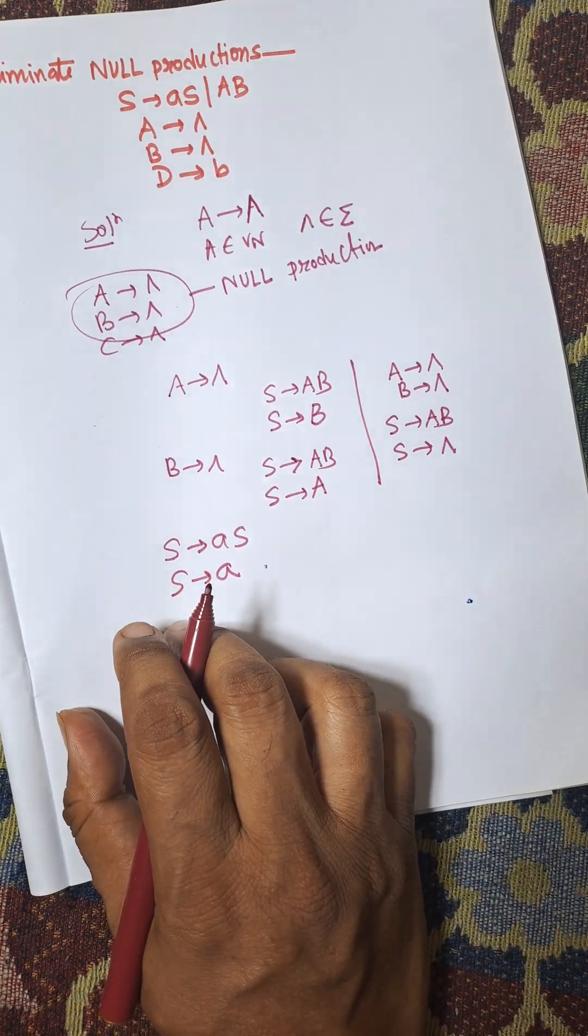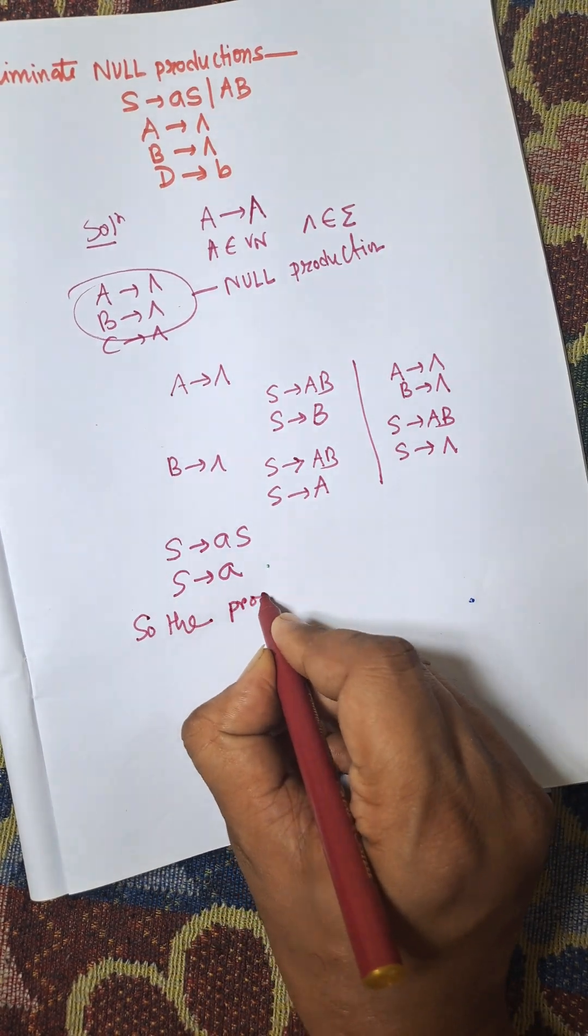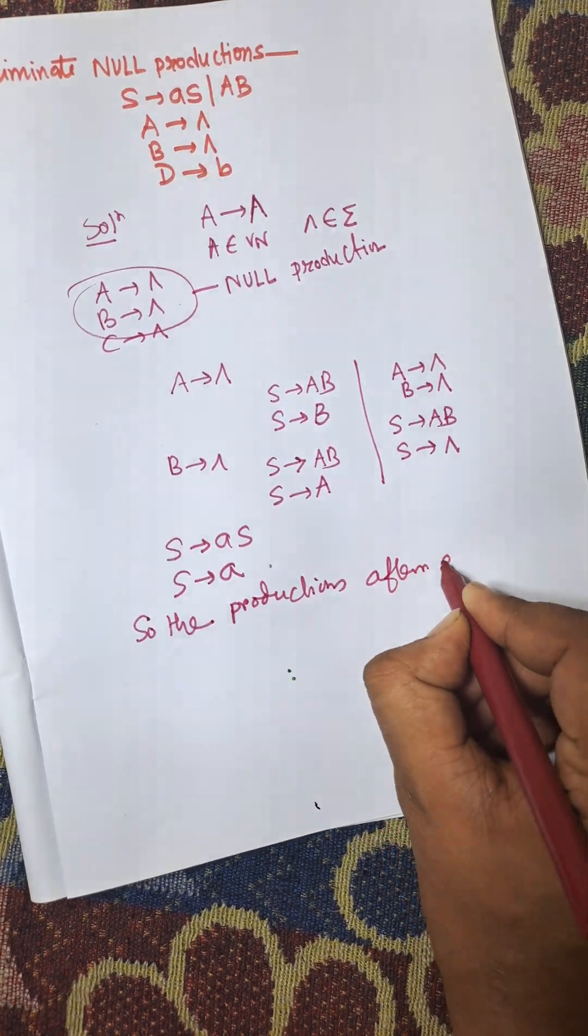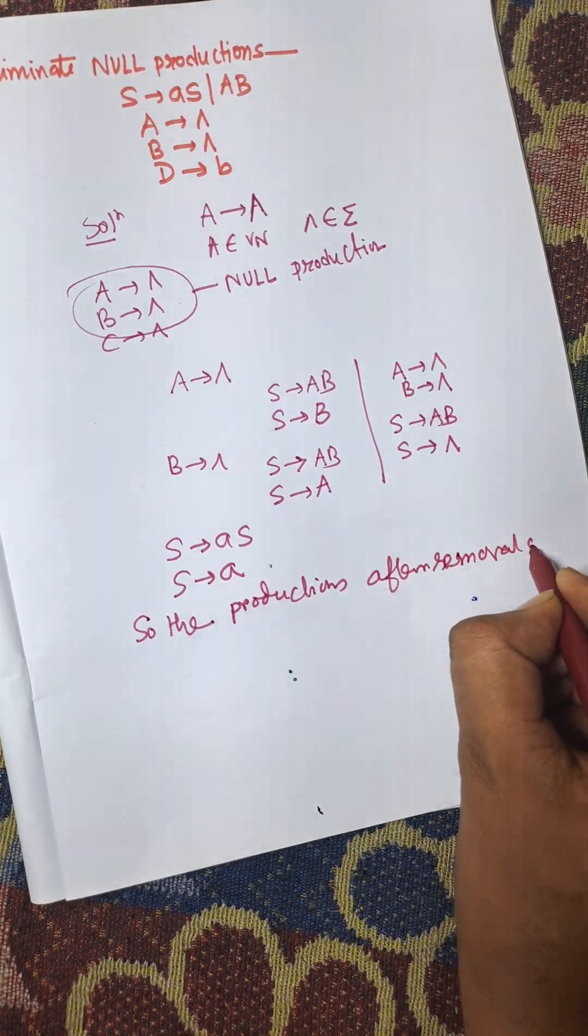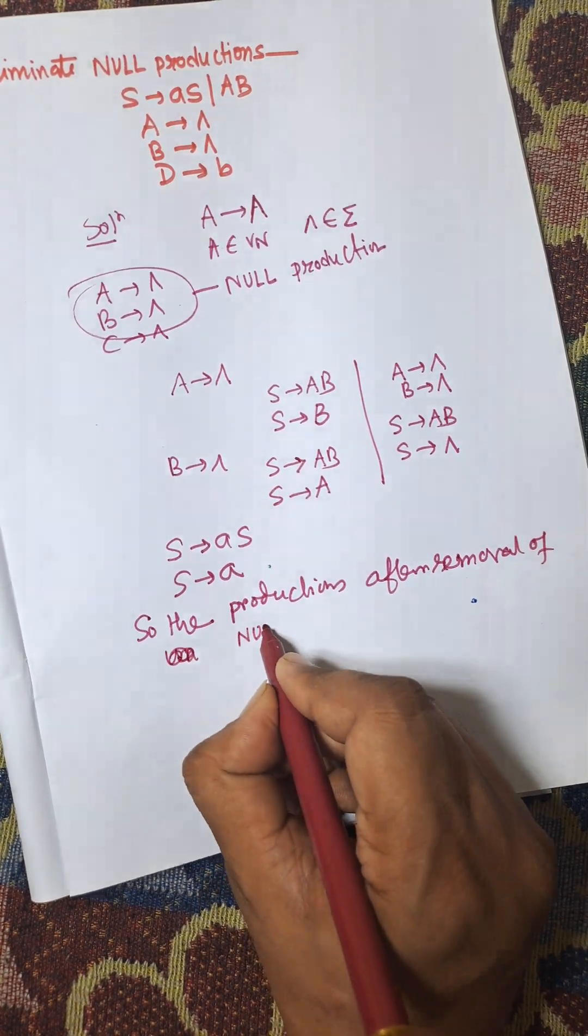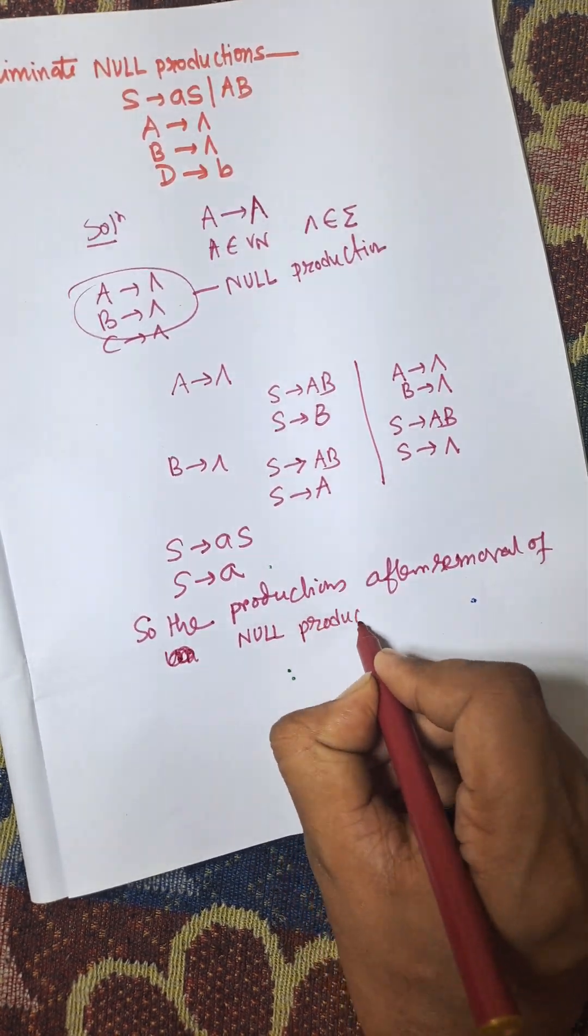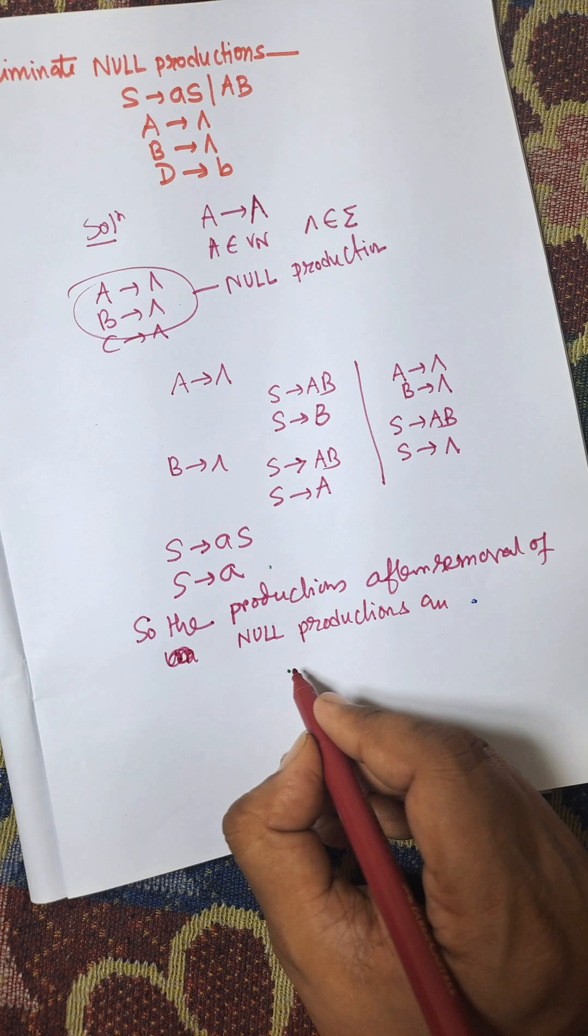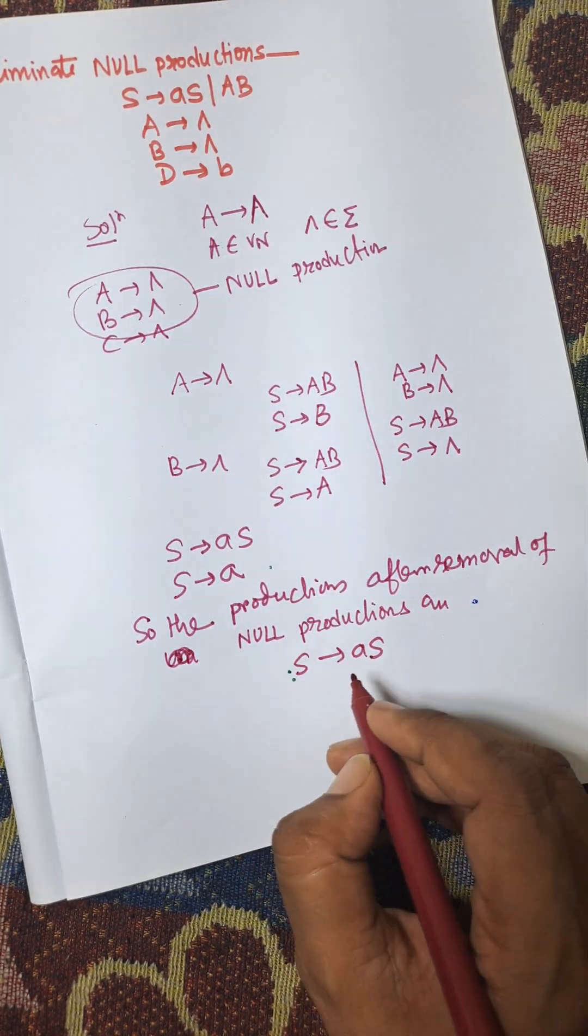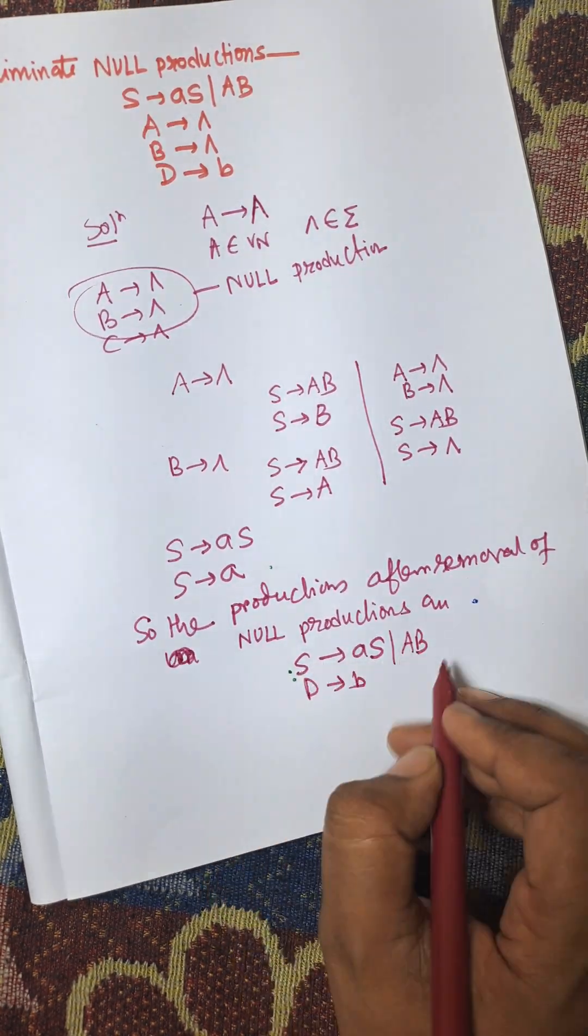So finally, the productions after removal of null productions are: S to A is the first one, then S to AB, and D to B are already normal productions.